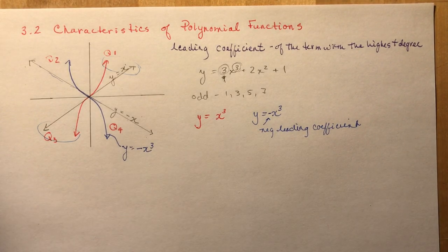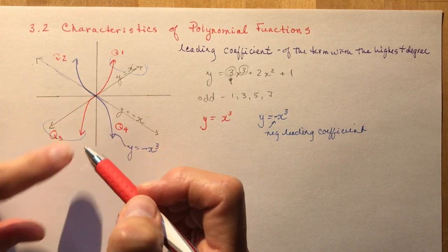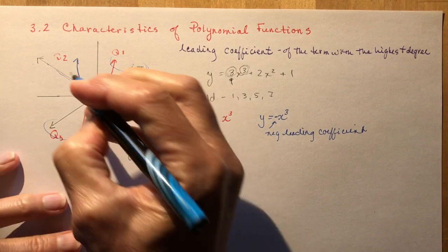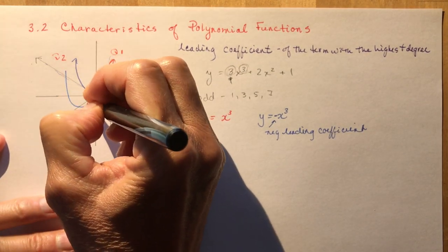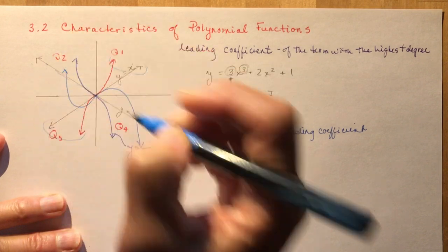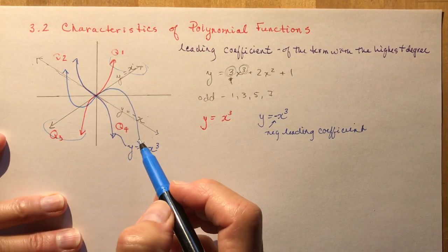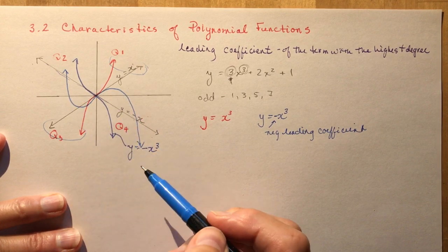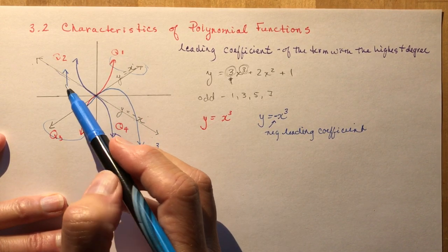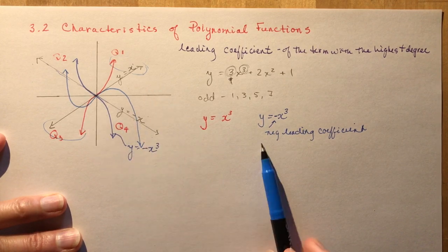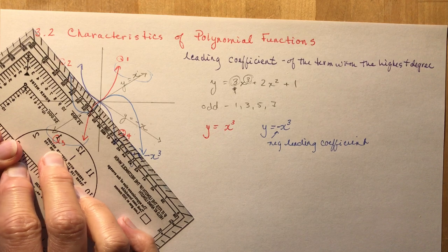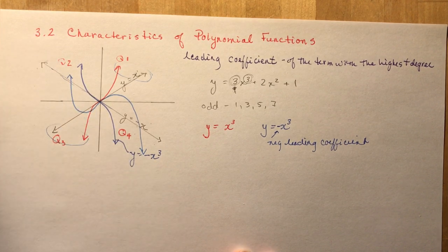That holds true for any shape of cubic function — they don't all look like this. This particular one has a triple root. So if I had a function with single roots that goes like this, I would know by looking at it that it has an odd degree. I know it has three roots, so it's a cubic function, and it's starting in Q2 and ending in Q4 — so it has a negative leading coefficient. That's pretty easy.